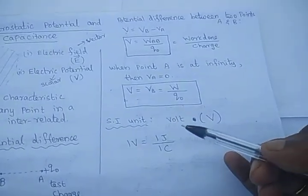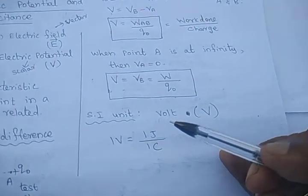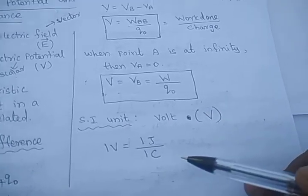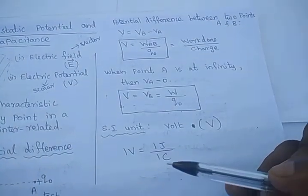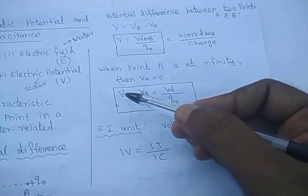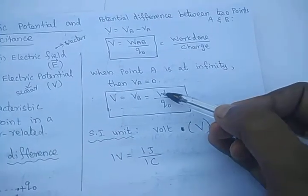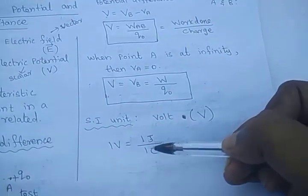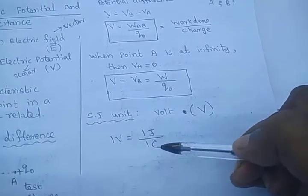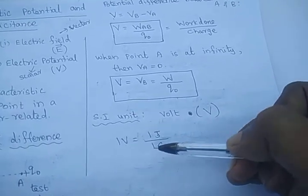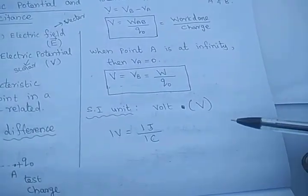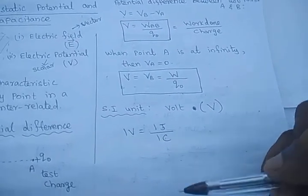What is the SI unit of potential or potential difference? It is volt. You should always write the SI unit in small letters; the symbol is capital V. One volt is defined as: when work done is one joule and charge is one coulomb, the amount of work done to bring a charge from infinity to a particular point against the electrostatic force is called one volt. This is the definition of the SI unit of potential.